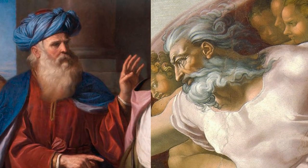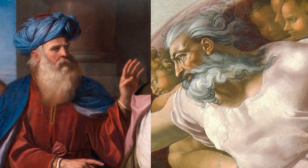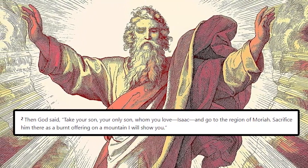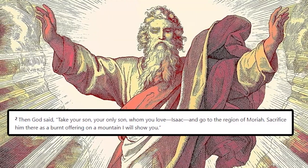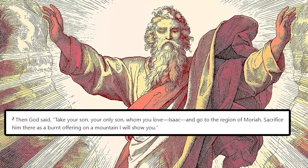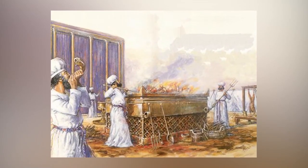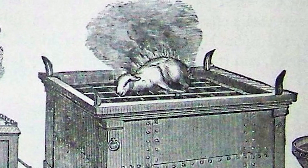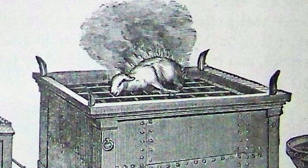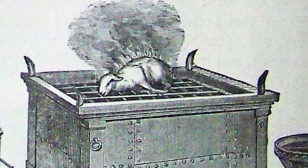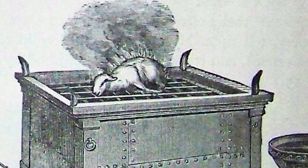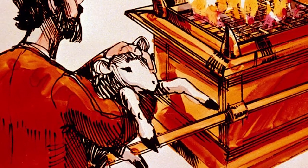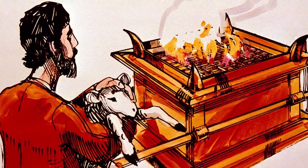So one day, God spoke to Abraham. He said to take his son Isaac to the region of Moriah and then sacrifice him as a burnt offering on a mountain. A burnt offering is when you burn your offering on an altar. In these times, one of the ways that people showed their love and devotion to God was by bringing him sacrifices. Typically the sacrifices were done with an animal like a lamb.